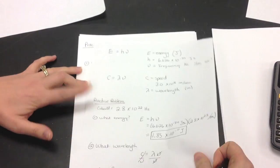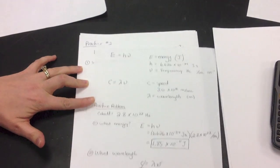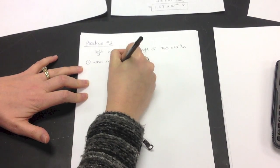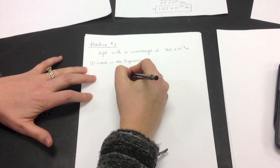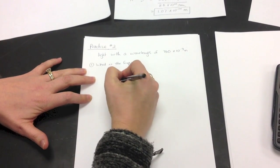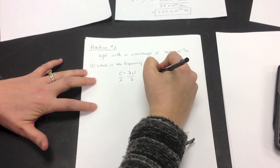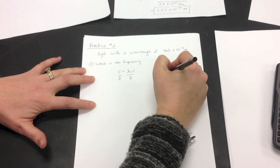So again, this is what relates those two together. We're going to have C equals lambda nu. In order to find frequency, I have to get frequency by itself, so I divide both sides by lambda. So therefore, frequency equals C over lambda.